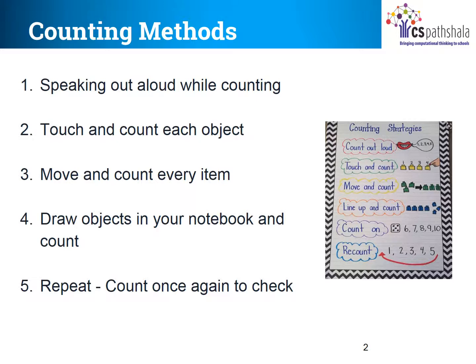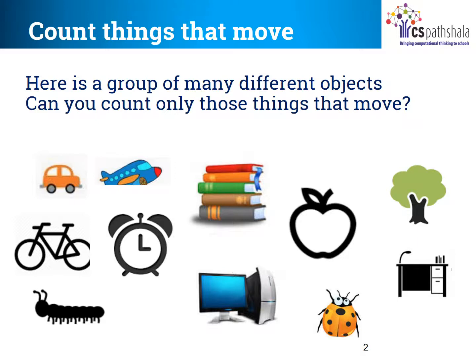Children, do you feel that any method can be useful anywhere? No. For example, you cannot always move objects and count. Can you count stars up above by moving? No. How can we count something that is moving, like animals or birds? If you have a camera, you can click a photo. And if you are watching a movie and want to count something, you can pause the movie and then touch and count. Can you see all the pictures on the screen now? Can you count them? 1, 2, 3, 4, 5, 6, 7, 8, 9, 10 and 11.